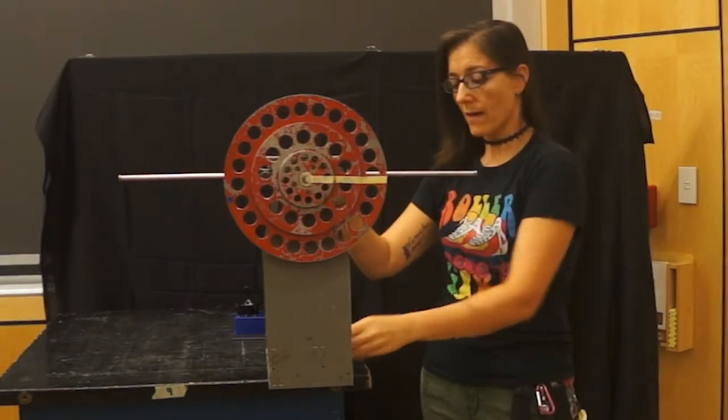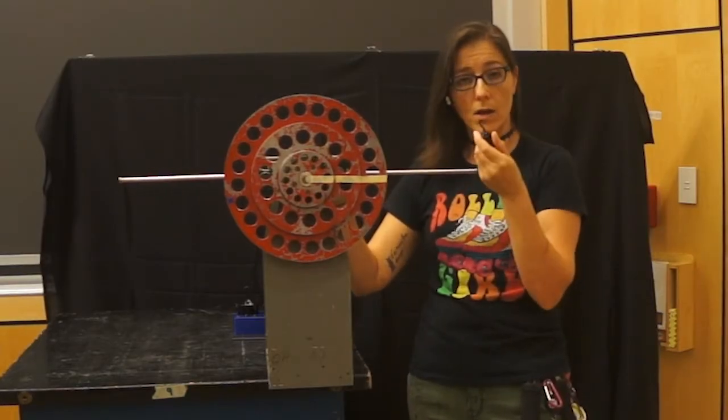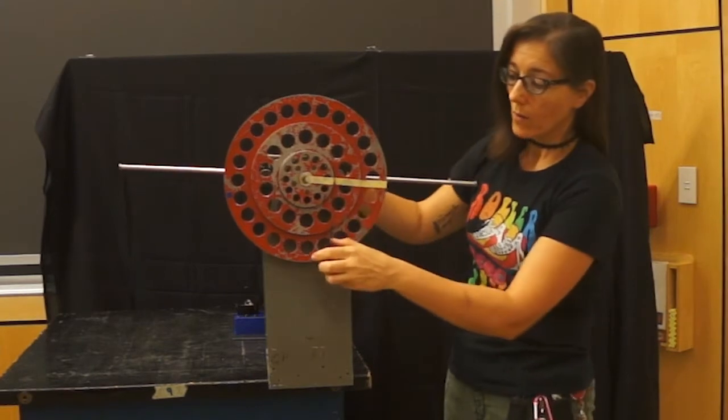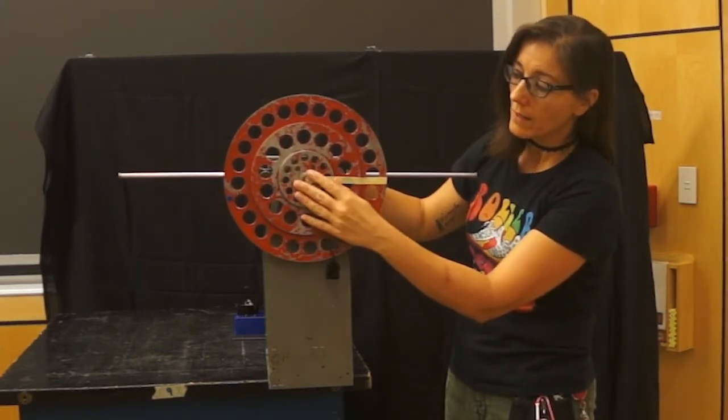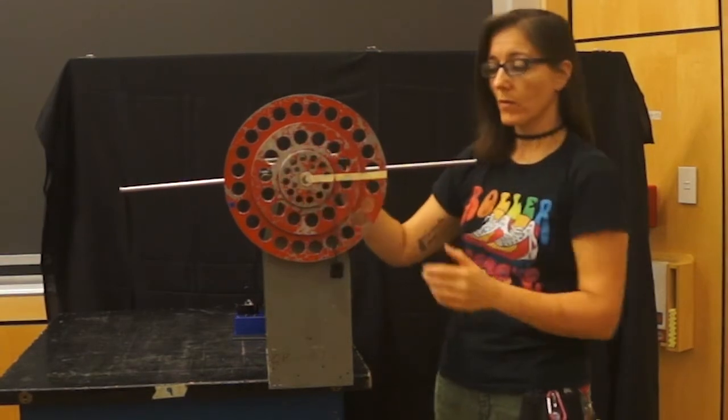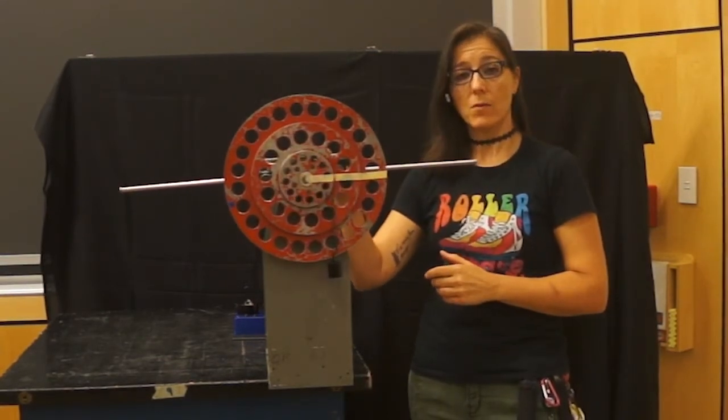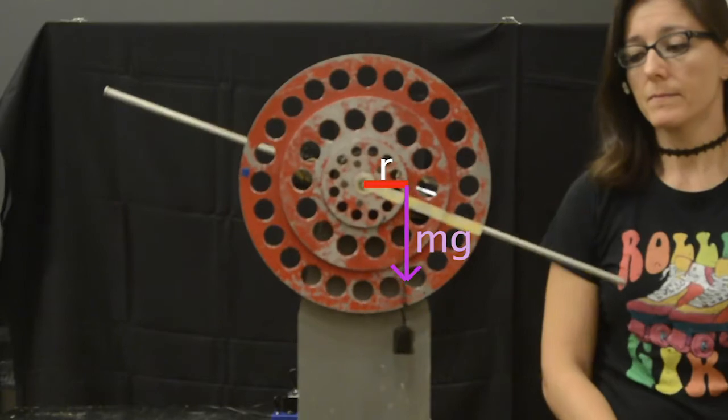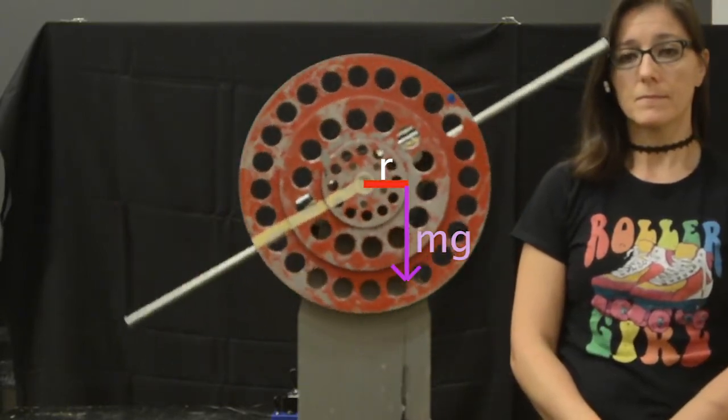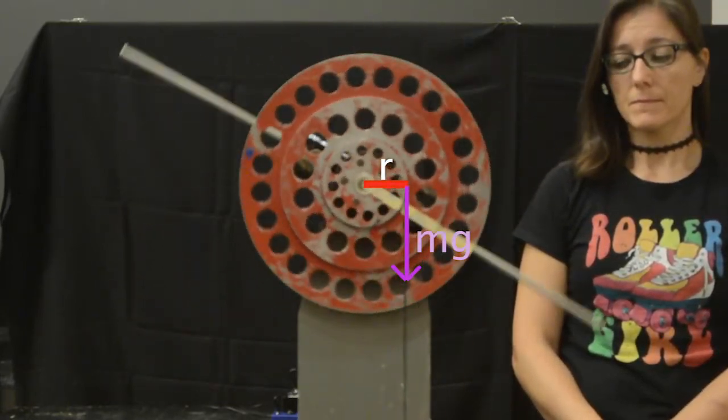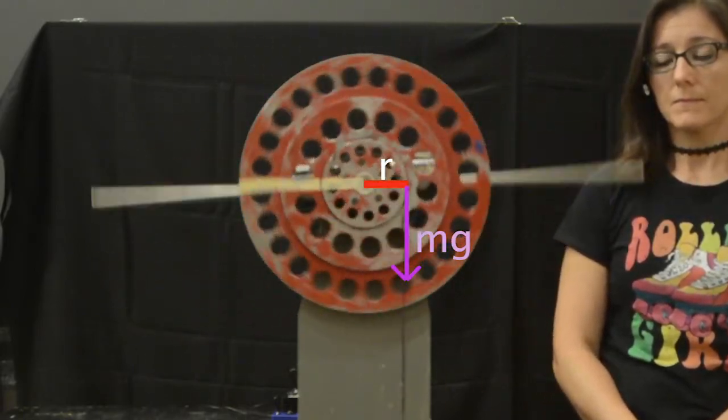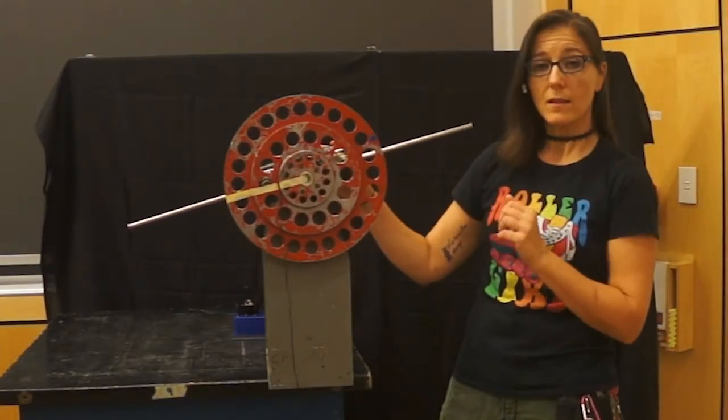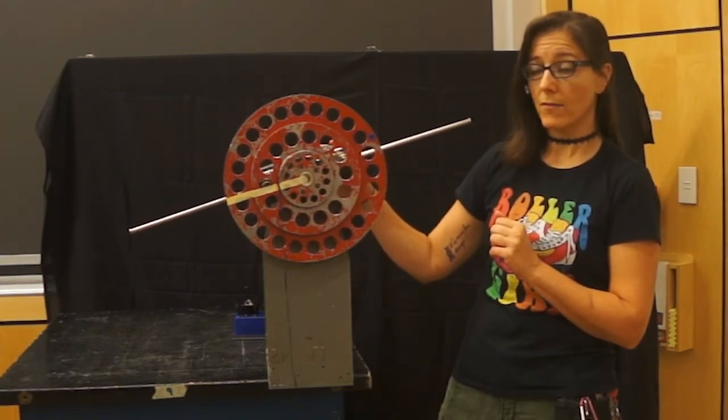Here we have a 100-gram mass that we are going to hang on this string that is located at the innermost ring of this circle. Let's watch the motion as it unfolds. We can see that the 100-gram mass was able to unravel the system.